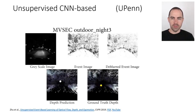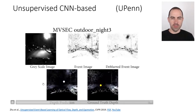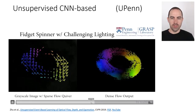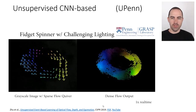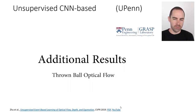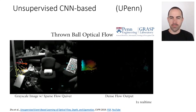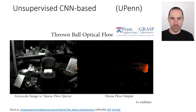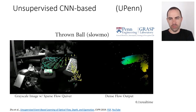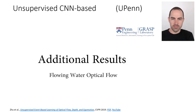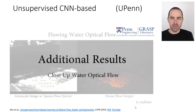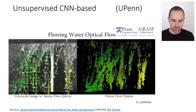Another network variant estimates depth instead of flow using a similar architecture. Results on a fidget spinner spinning very fast show the network can estimate reasonable optical flow even though there is no ground truth for comparison. The method generalizes to other scenes it wasn't trained on — for example, water scenes that are overexposed in frames but visible in events — showing qualitatively good results.